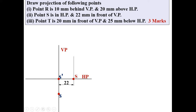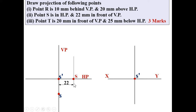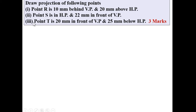This was the rough figure for point S. Now draw it with instruments. Draw the XY line. S and S' lie on the same vertical line. S' is on the XY line itself. This distance is 22 mm, so with the scale mark 22 mm - that gives point s. This is the projection of point S: S' and s. This figure is what you have to draw in the examination.